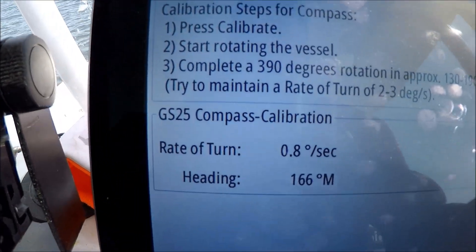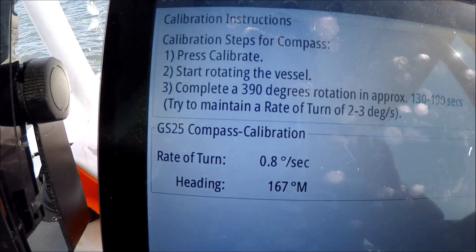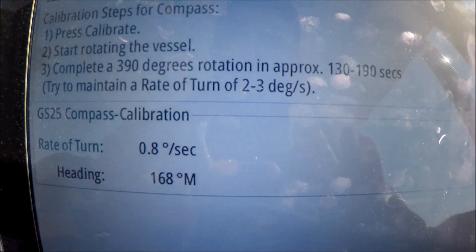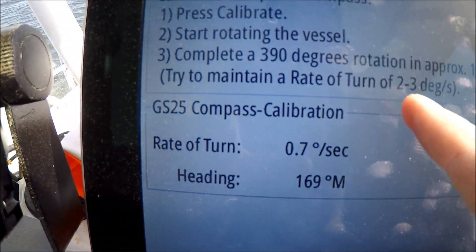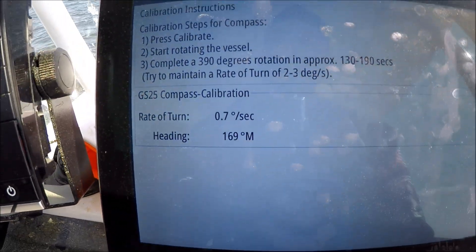It gives us instructions: calibration step for compass, press calibrate, start rotating the vessel, complete a 390 degree rotation in 130 to 190 seconds. It says try to maintain a rate of turn of 2 to 3 degrees. It'll actually help us. It'll show us what our rate is here.